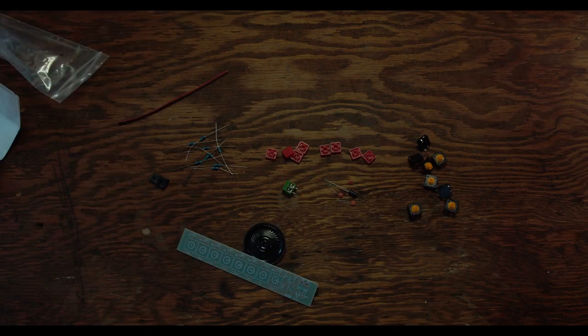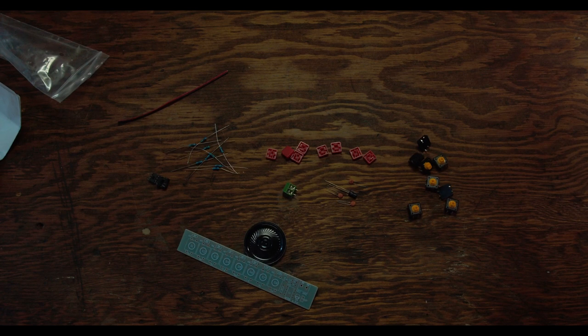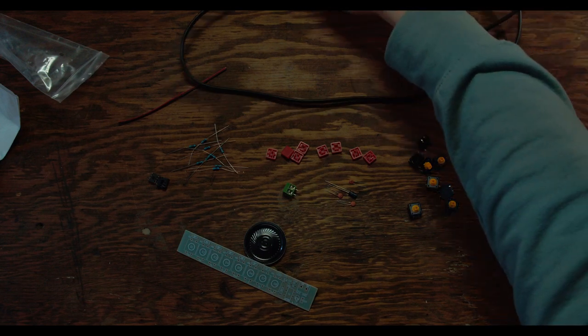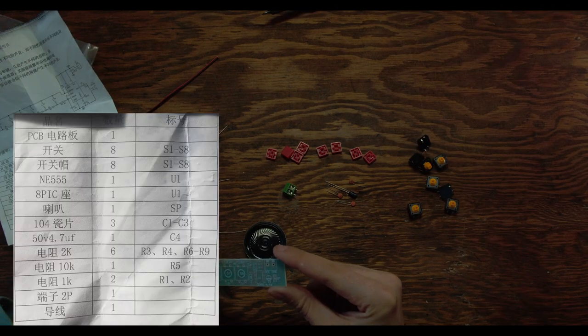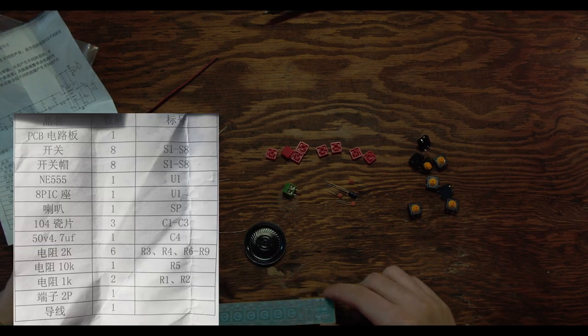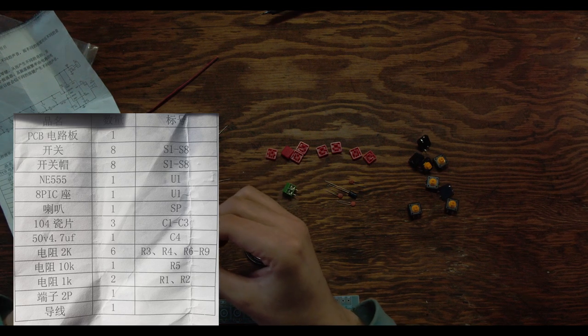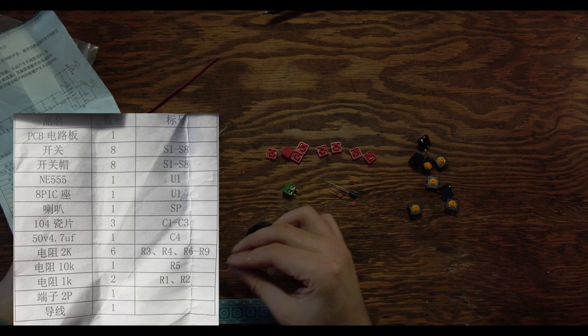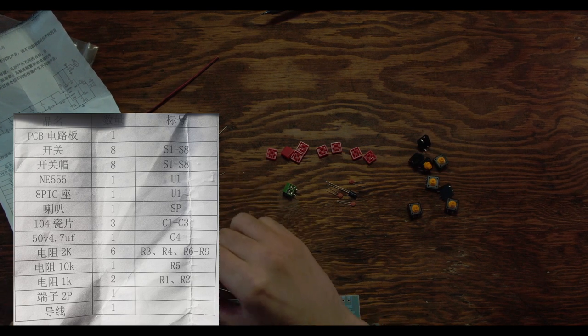First thing we're going to need is our soldering iron. I'll put a link below where you can get one of these. I got this one on Amazon for like 10 bucks. I'll put a picture up of the paper that you're supposed to receive with the kit. It shows everything you have in the kit and I would recommend separating it all on the table like we do here to make sure everything's ready and organized for when you build it.